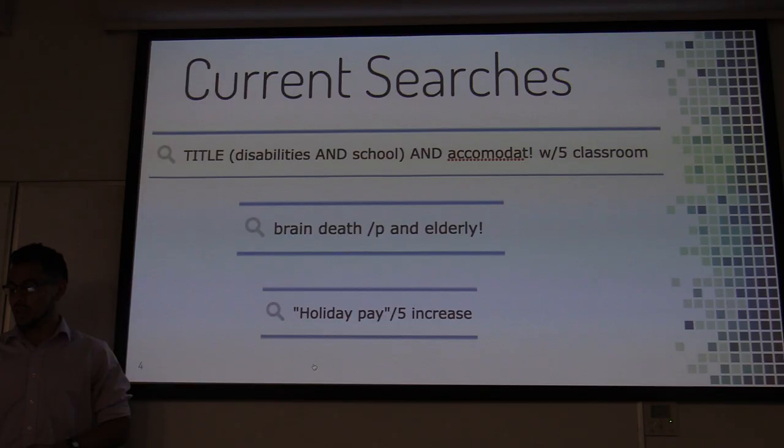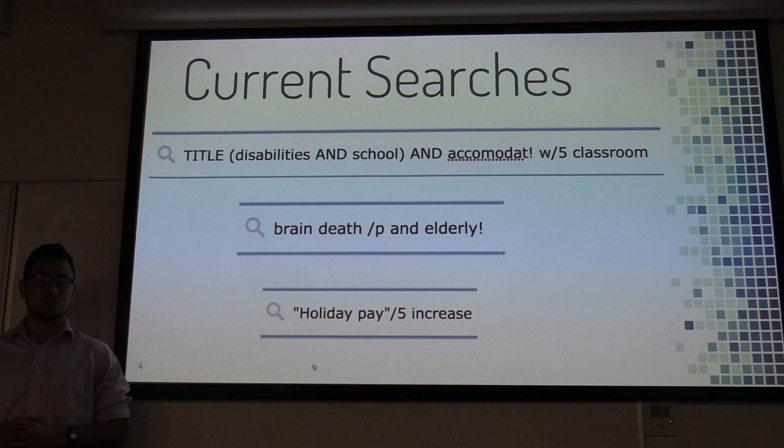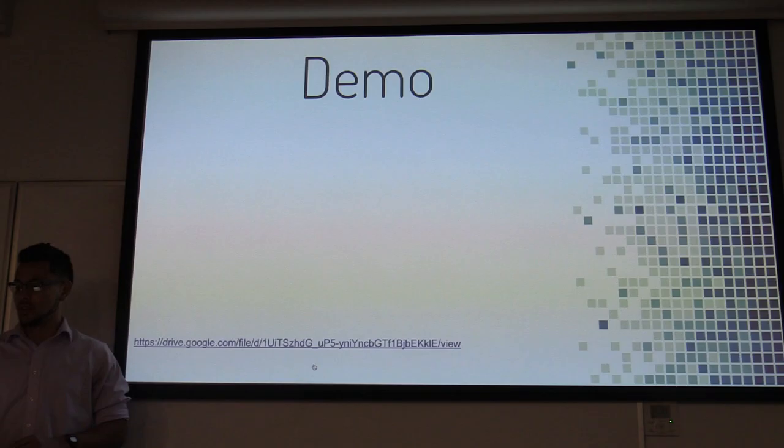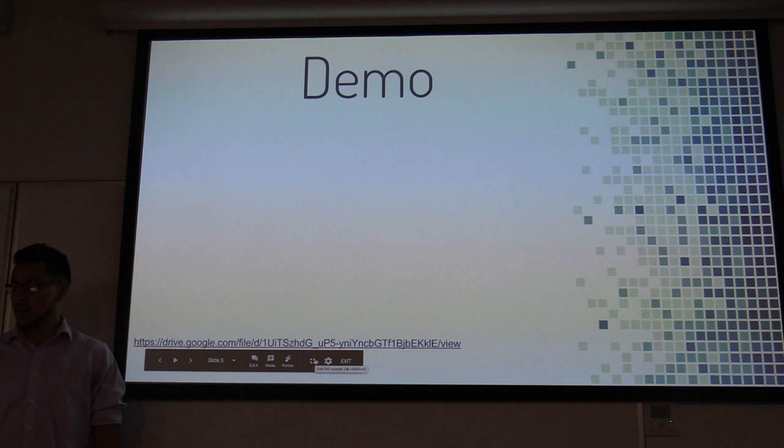Part of the problem is the way the current searches are structured. You can tell from these three search queries that are typical — it's pretty complicated to try to get an accurate search going. My question is: couldn't we do something different? Couldn't we have an easier system that gets us equally highly accurate results?